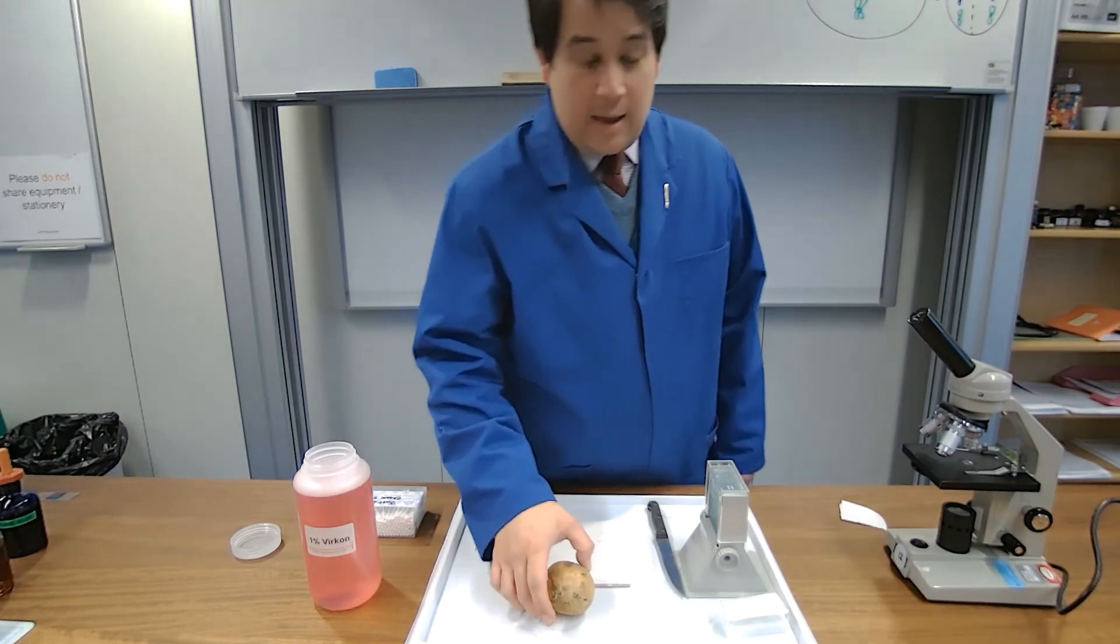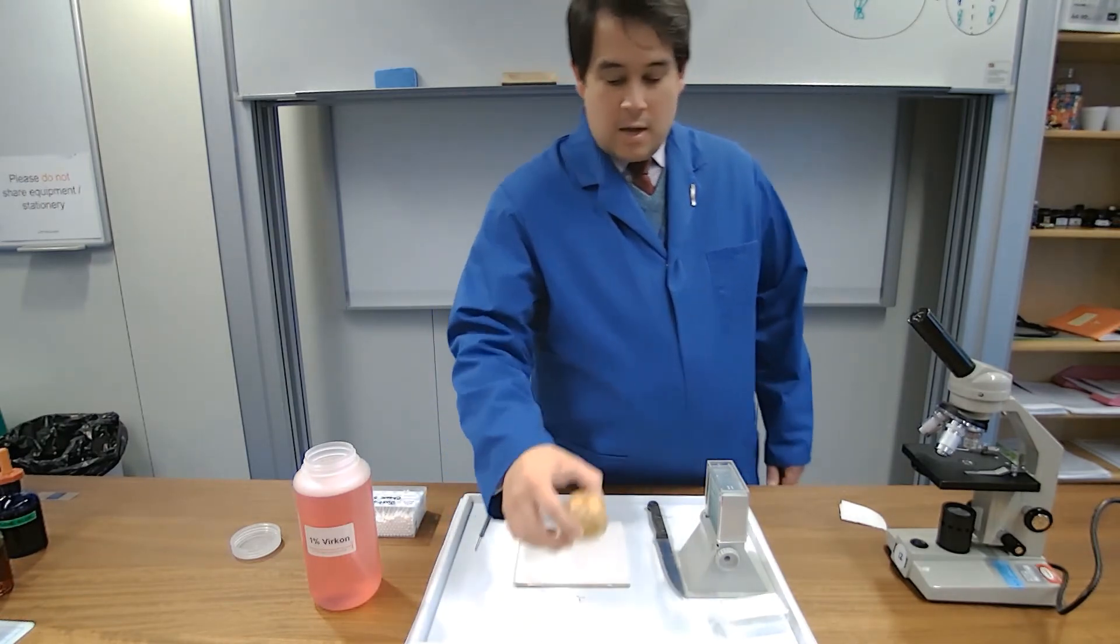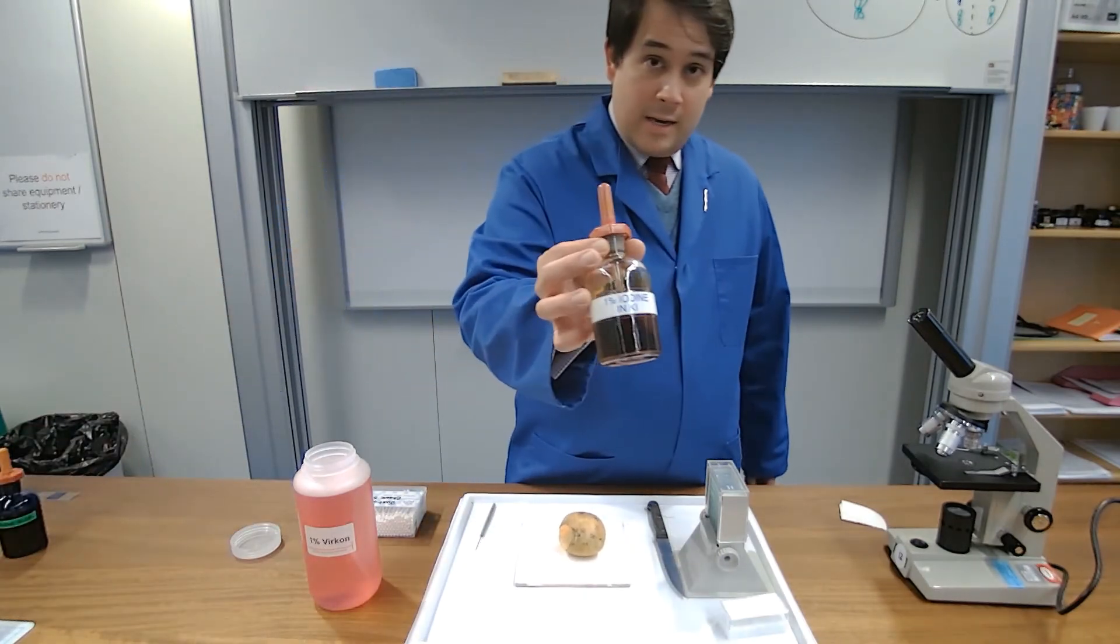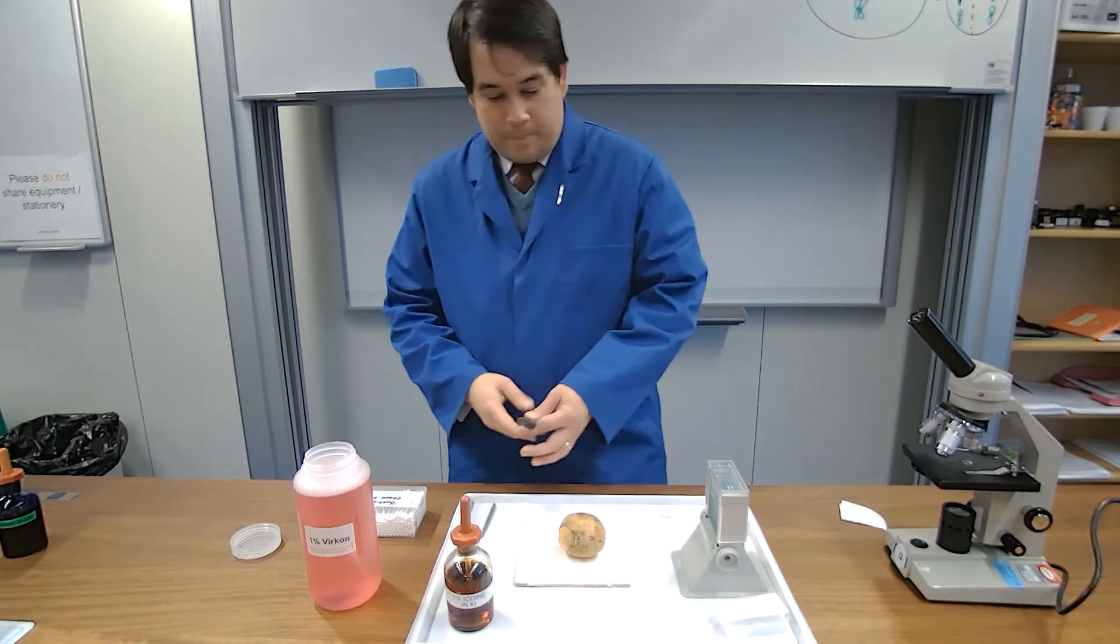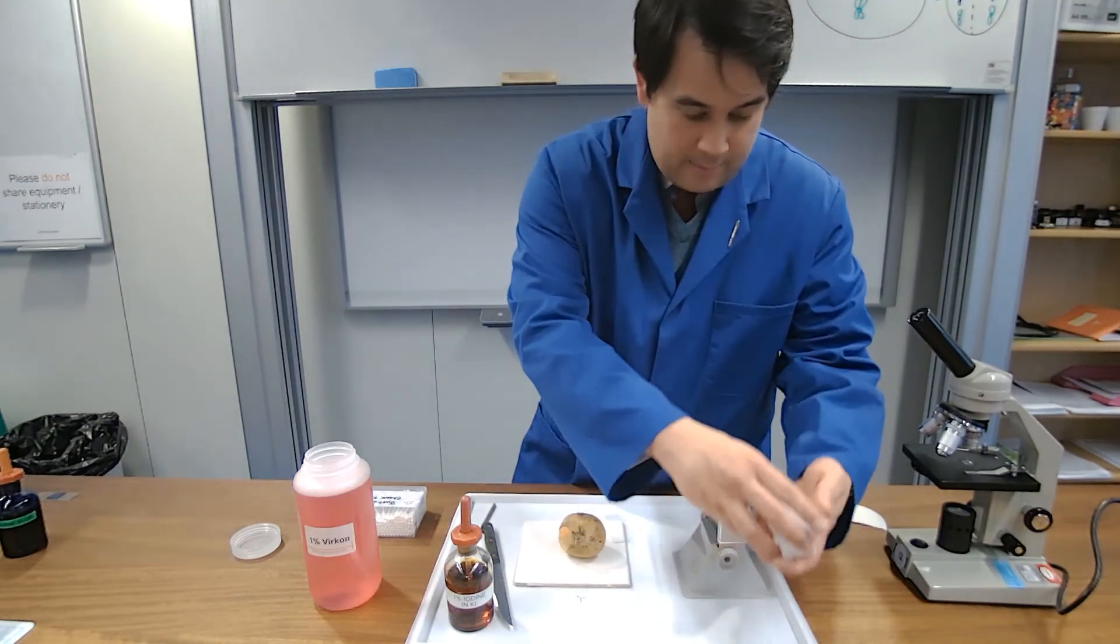Next we're looking at a plant cell slide preparation. So we're going to look at onion which is our plant. We're then going to use a different stain this time. We're going to be using iodine.